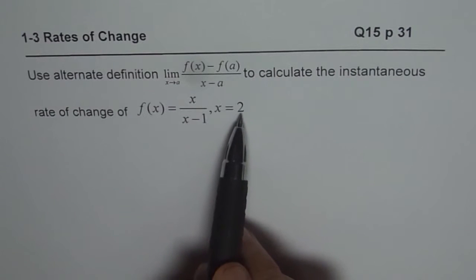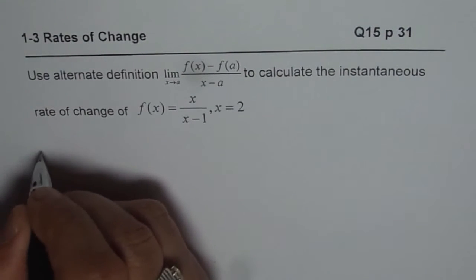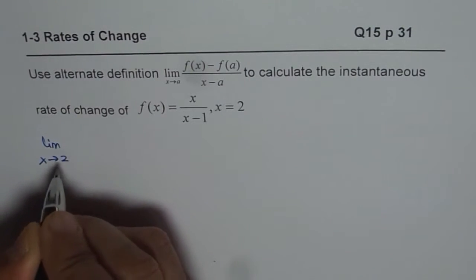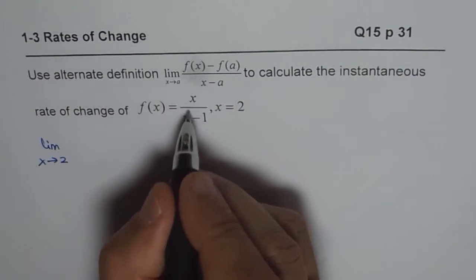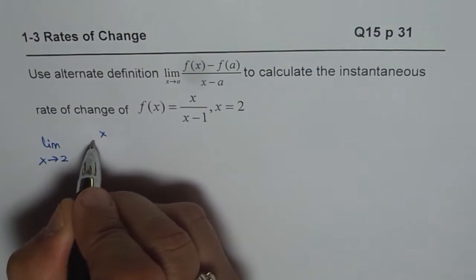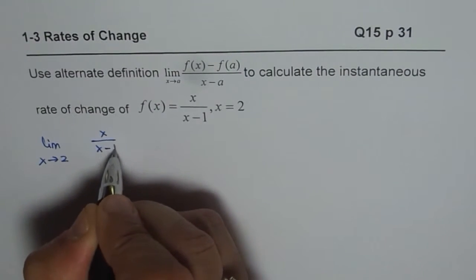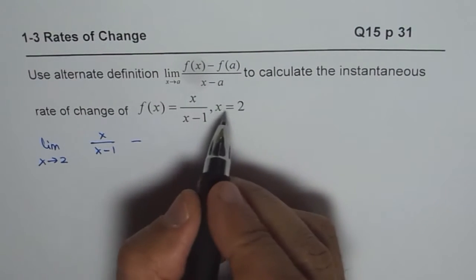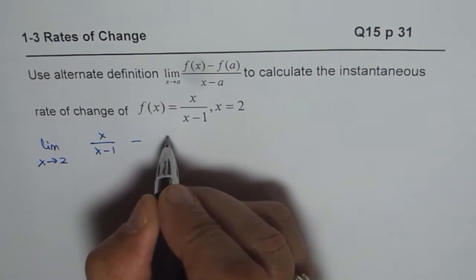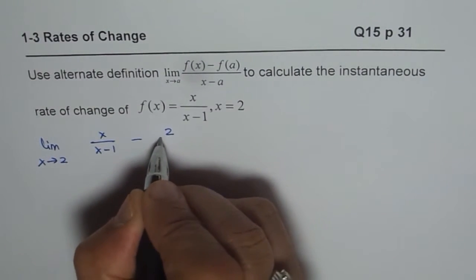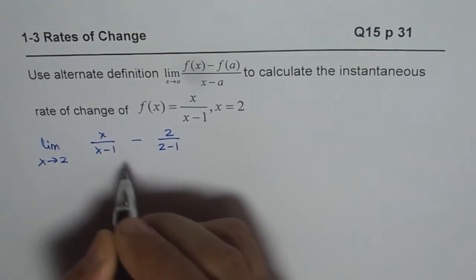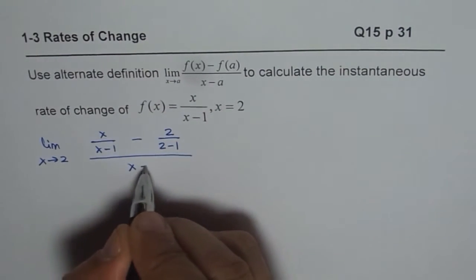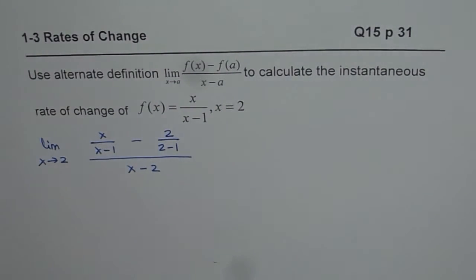The value of a given to us is 2. So, let's utilize this formula and we can say limit when x approaches 2, for f of x which is x over x minus 1 minus f of a. We replace x with a, a value for us is 2. So, it is 2 over 2 minus 1 divided by x minus a which is x minus 2. That is how we can start.